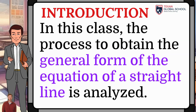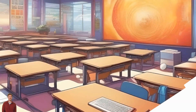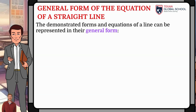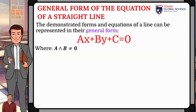If we remember all the forms and equations of a line demonstrated in previous classes, they can all be represented in a general way. That is, ax + by + c = 0, where a, b, and c are the coefficients of the general form.